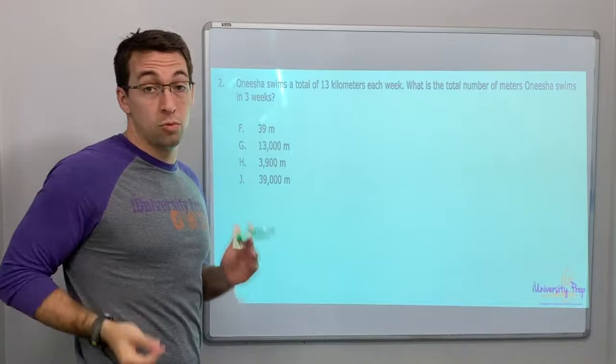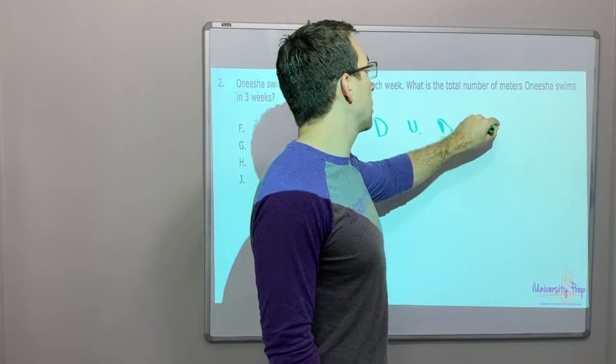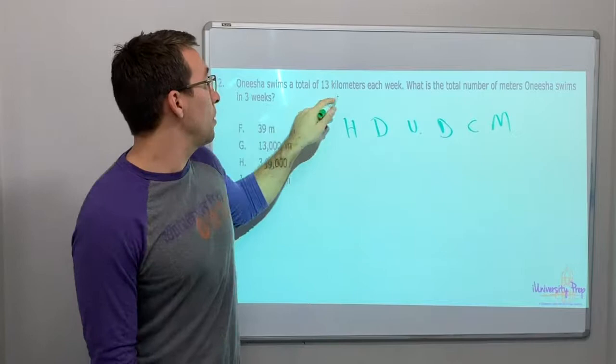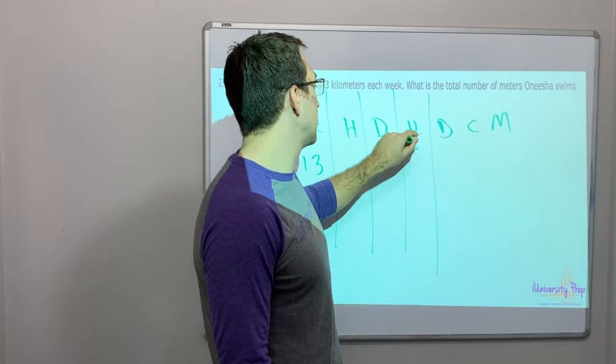Onisha swims a total of 13 kilometers each week. What is the total number of meters? Kilometers. So King Henry died unexpectedly drinking chocolate milk. Kilometers, right? 13. How many meters? So let's go 13 kilometers. And we're going all the way to meters. That's unexpected. So this is units.